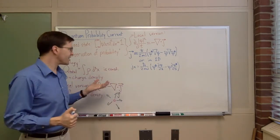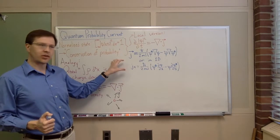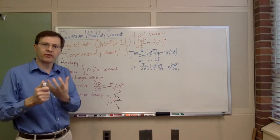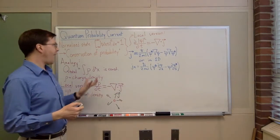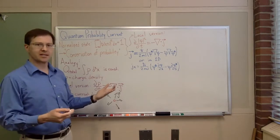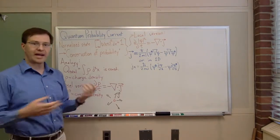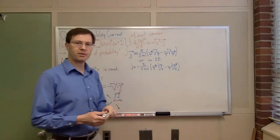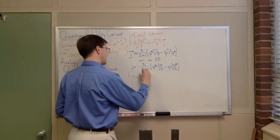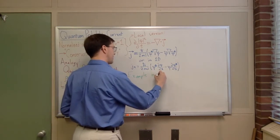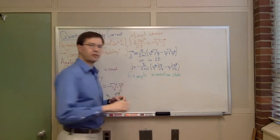So what's this telling us? Once you work out what this equation is, it's telling you how probability is moving from one place to another — how the probable location of your particle is moving from one place to another as time passes. To really make sense of it, the best thing we can do is just apply it to a common case or two. The simplest example is a momentum state.